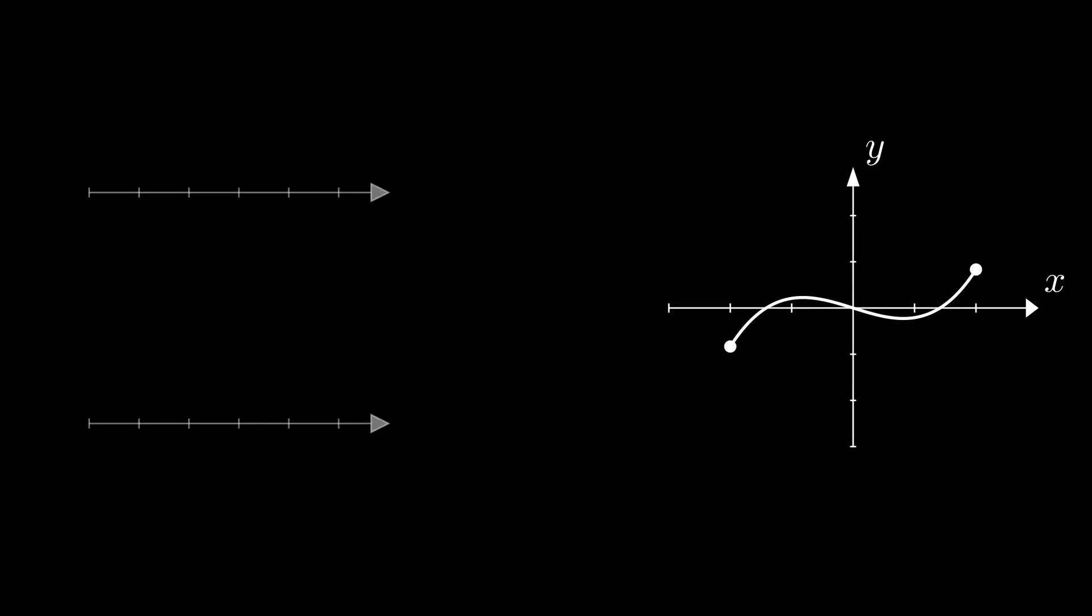Imagine that we have two parametrizations of the same curve. We say that they are equivalent if there is a continuous monotone surjective function phi sending the domain of gamma 1 to the domain of gamma 2, satisfying that if we apply phi and then gamma 2, it is the same as applying gamma 1. If this happens, we say that gamma 1 and gamma 2 are reparametrizations of each other.